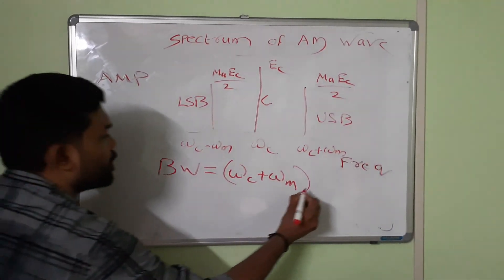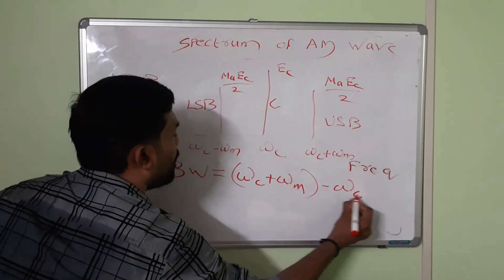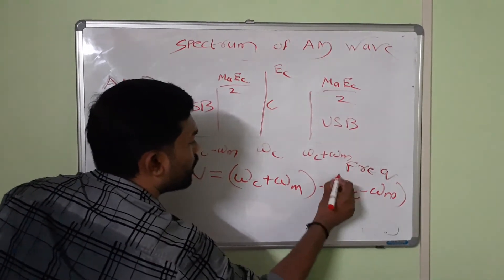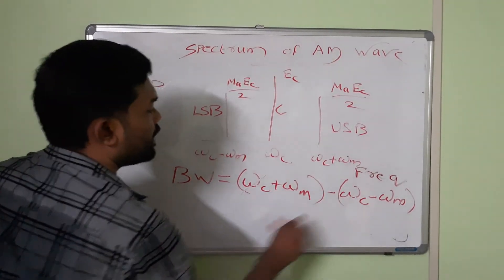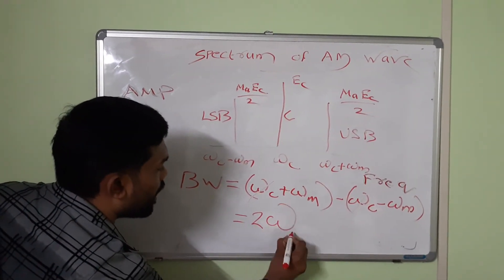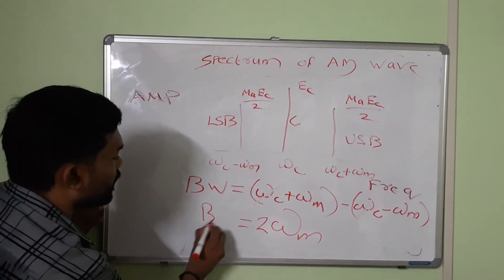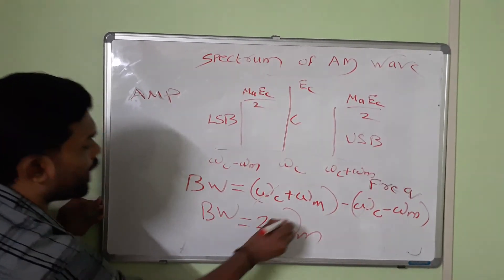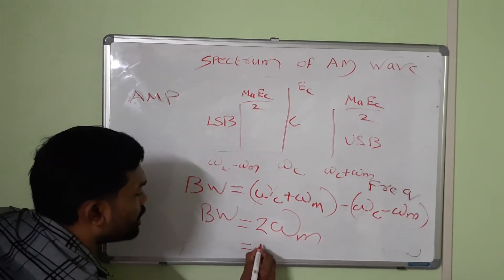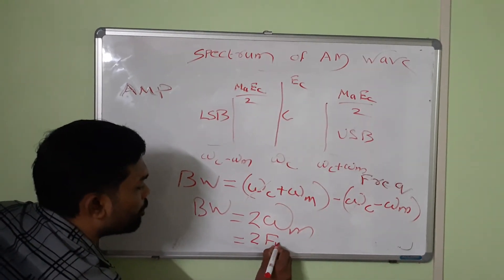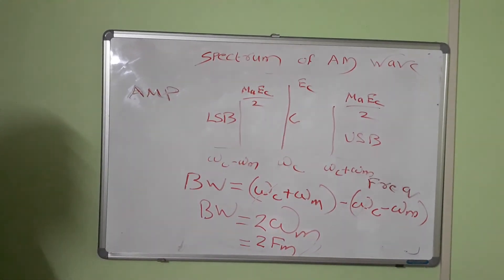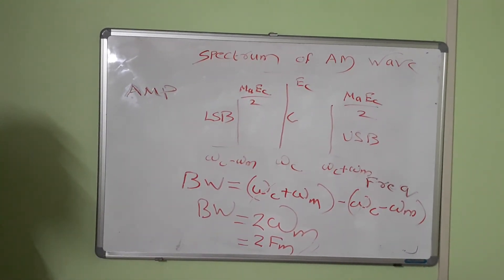The bandwidth equals the upper sideband frequency minus the lower sideband frequency. Lower sideband frequency is (ω_C − ω_M) and upper is (ω_C + ω_M), so ω_C cancels giving 2ω_M. Therefore, bandwidth is equal to 2 times the angular frequency of the modulating signal, or bandwidth = 2f_M. The AM signal bandwidth is 2f_M.